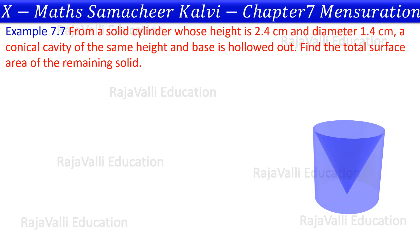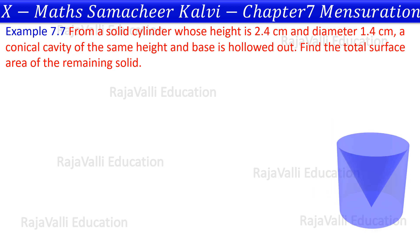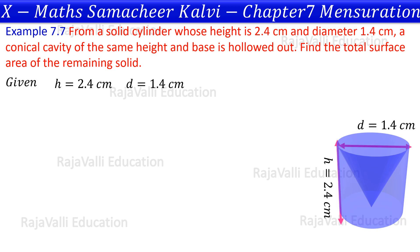Now let's note the dimensions. Cylinder height is 2.4 cm and diameter is 1.4 cm. Since diameter divided by 2 equals radius, we get radius R = 1.4 / 2 = 0.7 cm.